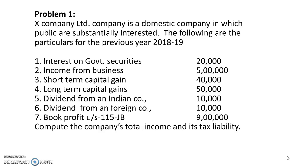The first problem: Company X Limited is a domestic company in which the public are substantially interested. The following are the particulars for the previous year 2018-19. The information given includes interest on government securities, income from business, short-term capital gain, long-term capital gain, dividend from Indian company, dividend from foreign company, and book profit under Section 115JB of 9 lakh. We are asked to compute the total income and tax liability.